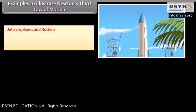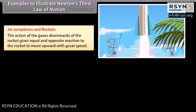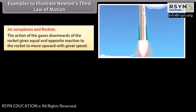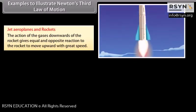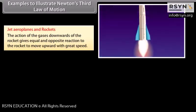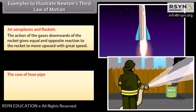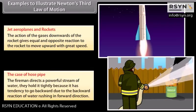Jet aeroplanes and rockets. The action of the gases downwards of the rocket gives equal and opposite reaction to the rocket to move upward with great speed. The case of hose pipe. The fireman directs a powerful stream of water. They hold it tightly because it has tendency to go backward due to the backward reaction of water rushing in forward direction.